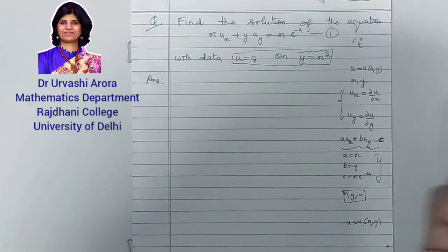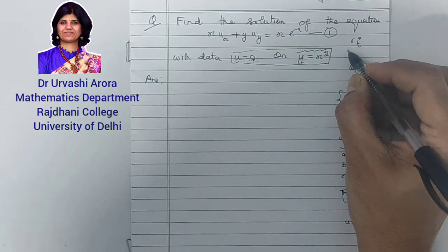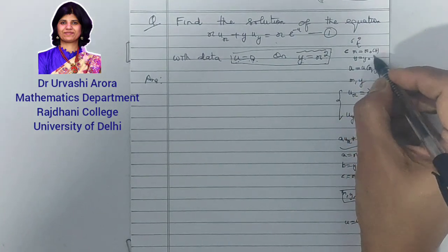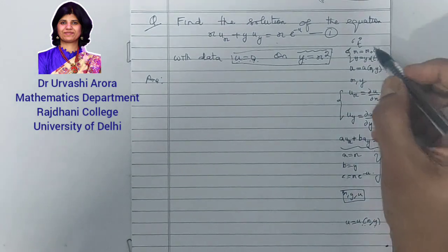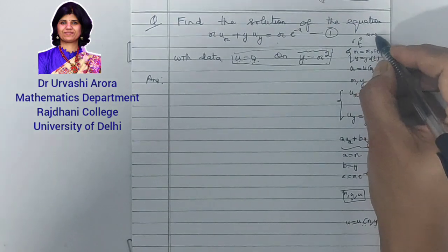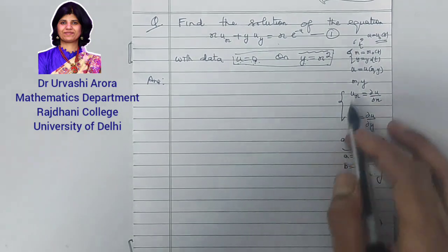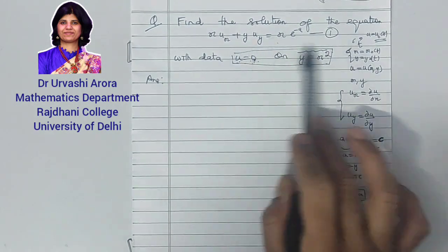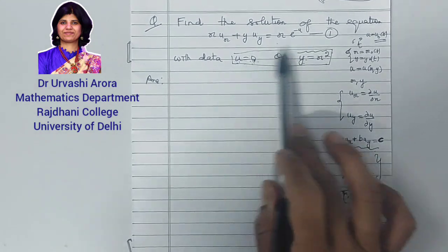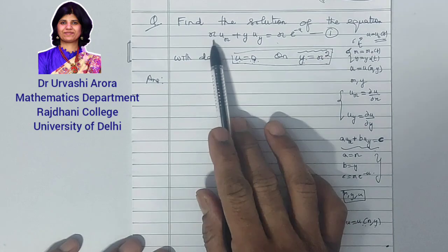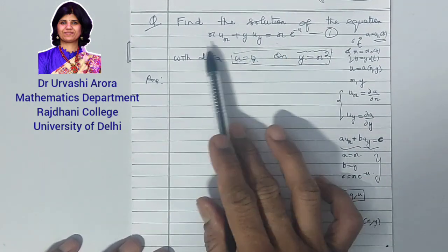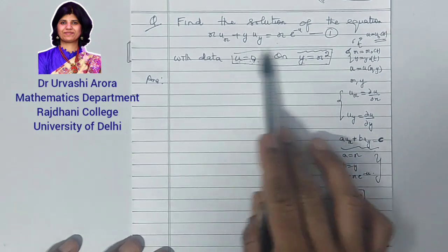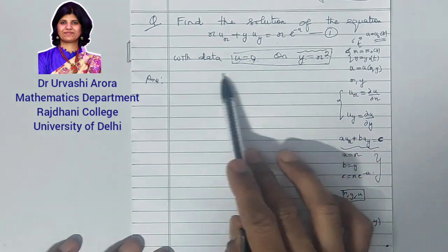If you look at that earlier video, you will see that the initial curve c was written in parametric form: x = x₀(t) and y = y₀(t), where t is a parameter, and the initial data u = u₀(t). However, sometimes the initial curve and initial data are expressed in Cartesian form, as is happening in this particular question. We are going to find the Cauchy solution satisfying the condition given in Cartesian form.